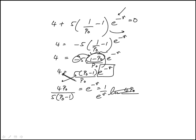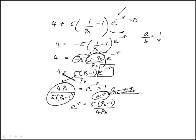This is 1 over e to the r. Which means e to the r is 5 times P sub 0 minus 1 over 4 P sub 0. Because I'm just going to flip. So essentially it's like this. 1 over, a over b is 1 over x. Which means x is b over a. You can just flip them. So this is x over 1.